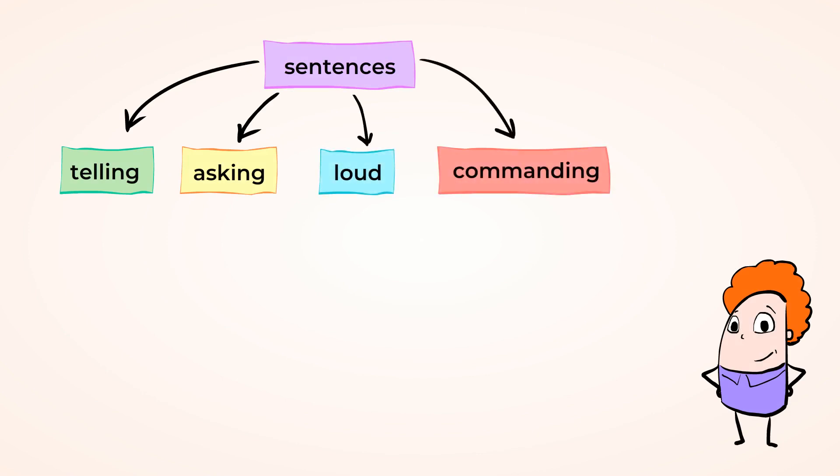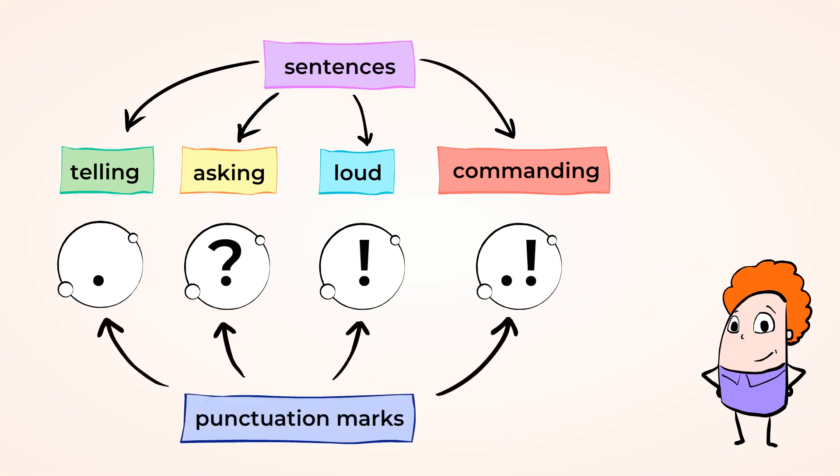Telling sentences end with a period. Asking sentences end with a question mark. Loud sentences end with an exclamation point. And commanding sentences end with a period or an exclamation point. Now these punctuation marks help us understand what we are reading and how to read it out loud.